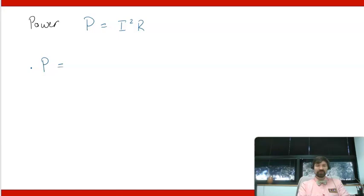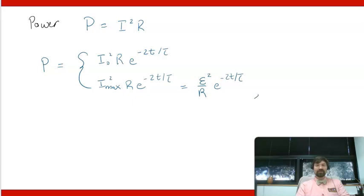then the power dissipated should look like either I_naught squared R e to the negative 2t over tau or I_max squared R e to the negative 2t over tau. If you'd prefer this would be epsilon squared over R e to the negative 2t over tau. This is again for the charging case and the discharging case.